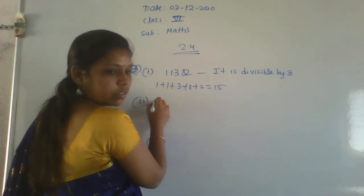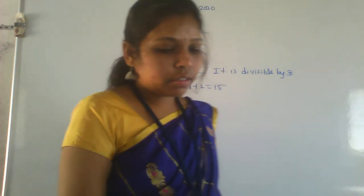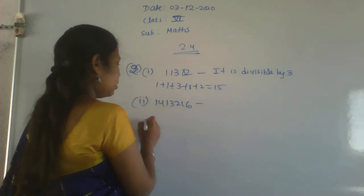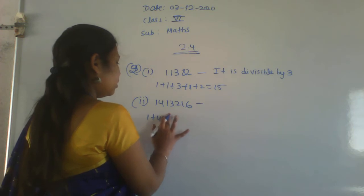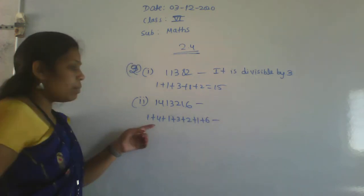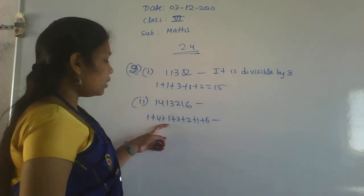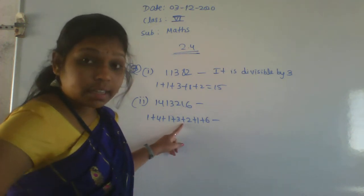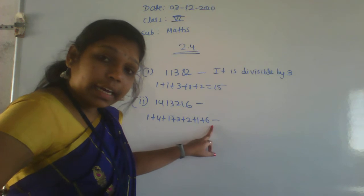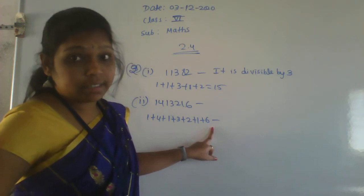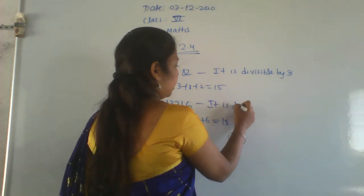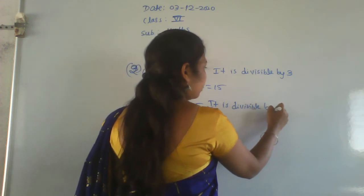Second problem is 1413216. Take the digit sum: 1+4+1+3+2+1+6. That is 1+4=5, 5+1=6, 6+3=9, 9+2=11, 11+1=12, 12+6=18. Whether 18 is divisible by 3? Yes. Therefore the whole number is divisible by 3.